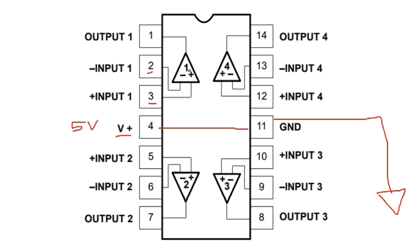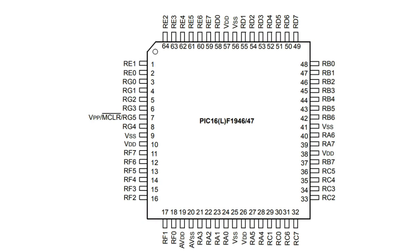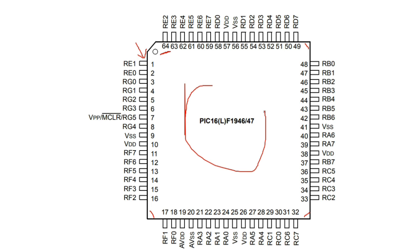This is a larger integrated circuit — a PIC16 — with about 64 pins. We always look for the sign that indicates pin number one. Here we have an angle marking and also a hole, which means this is pin number one. The reading direction always goes in this direction.